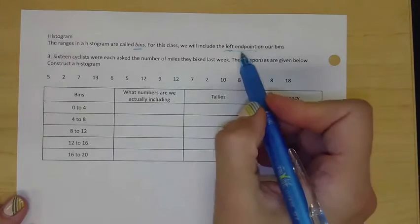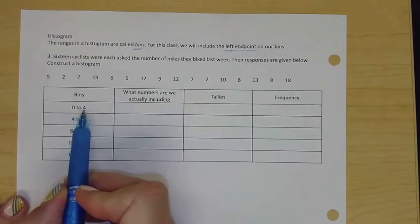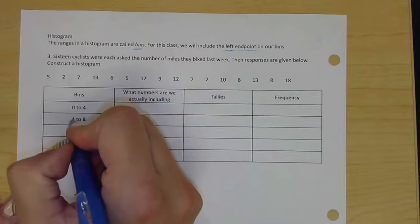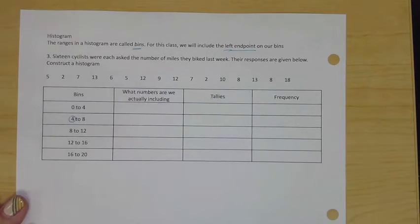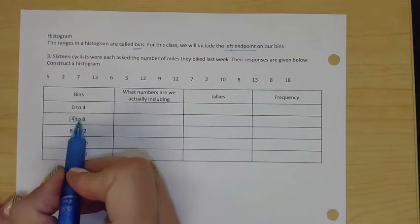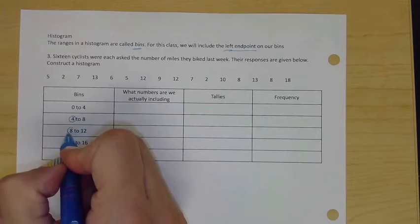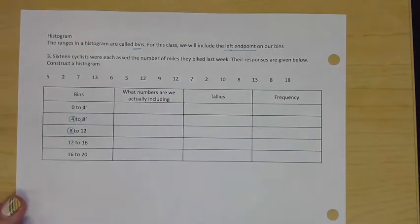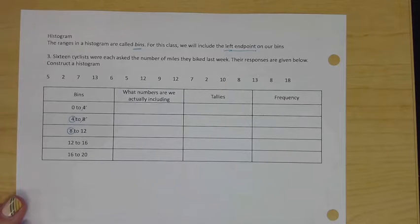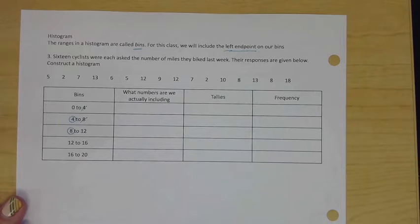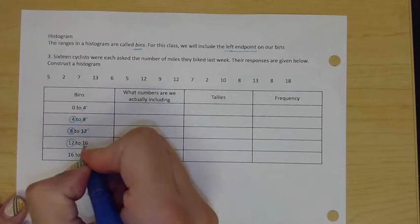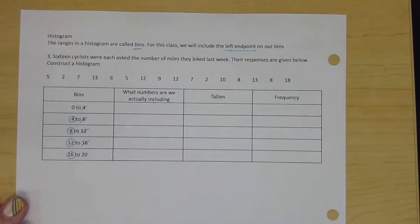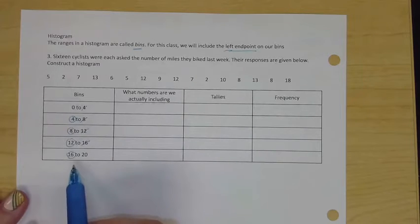This first bin we have zero to four, but four is going to be on this bin. We have four to eight, and eight is going to be in this bin and not this bin, because you can't count data twice. If we have a four, we can't put it in both bins. We have to pick which bin fours go in. I'm just going to go ahead and scratch this all the way down so we know which bin goes where.